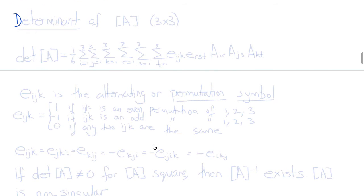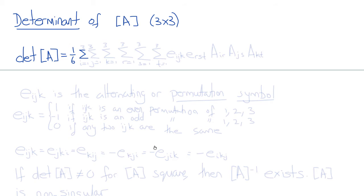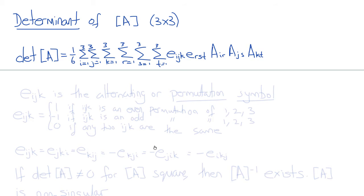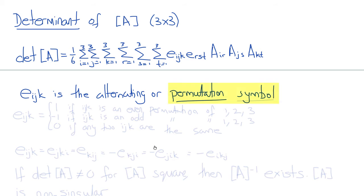The determinant is another familiar property of a matrix. For a 3×3 matrix A, we can write the determinant using a nested summation: (1/6) times the sum over i, j, k, r, s, t each from 1 to 3 of the special symbol εijk times εrst times air·ajs·akt. This special symbol, which enables us to write the determinant in indicial notation, is called the alternating or, more commonly, the permutation symbol. It is mostly zero except for special combinations of i, j, k.